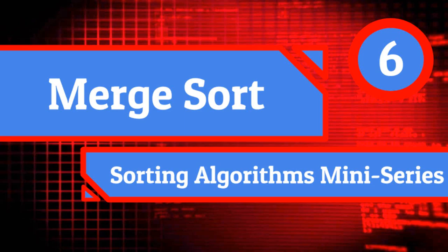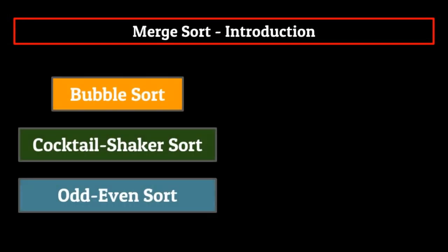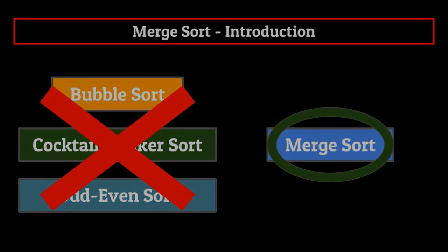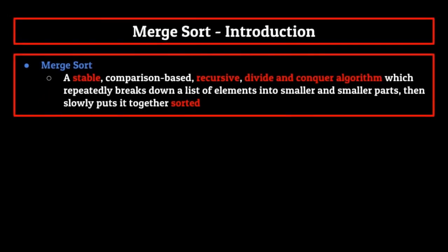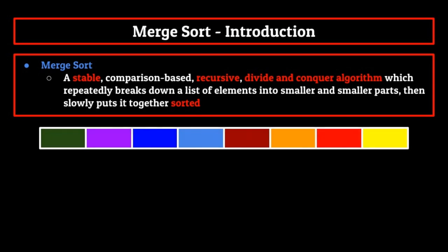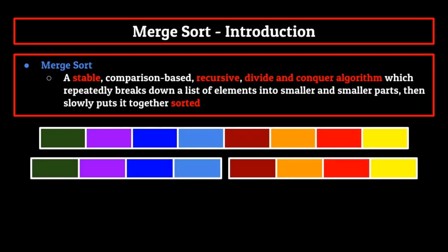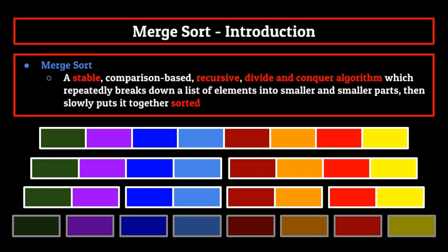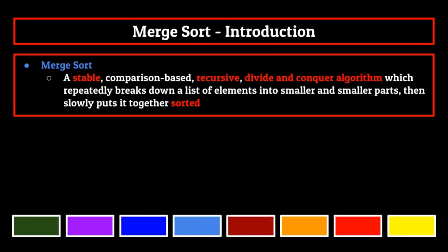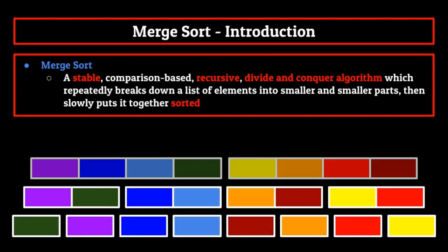Hello everyone, and welcome back to our series on sorting algorithms. Today we'll finally be moving on from bubble sort deviations and be talking about one of the most popular sorting algorithms out there, merge sort. We can define merge sort as a stable comparison-based recursive divide and conquer algorithm which repeatedly breaks down a list of elements into smaller and smaller parts, then slowly puts it back together.